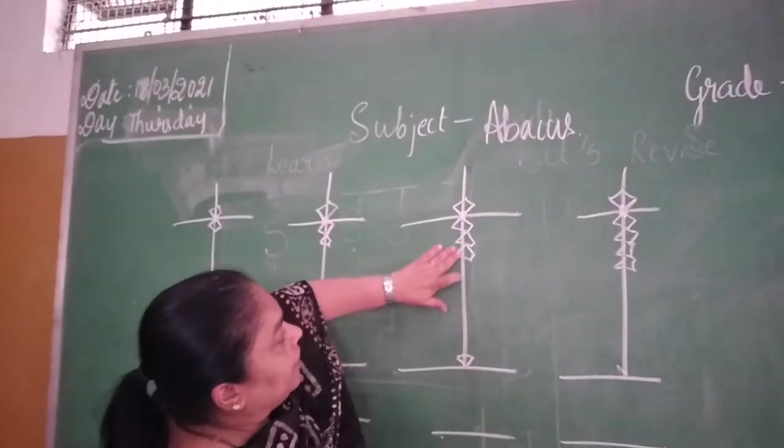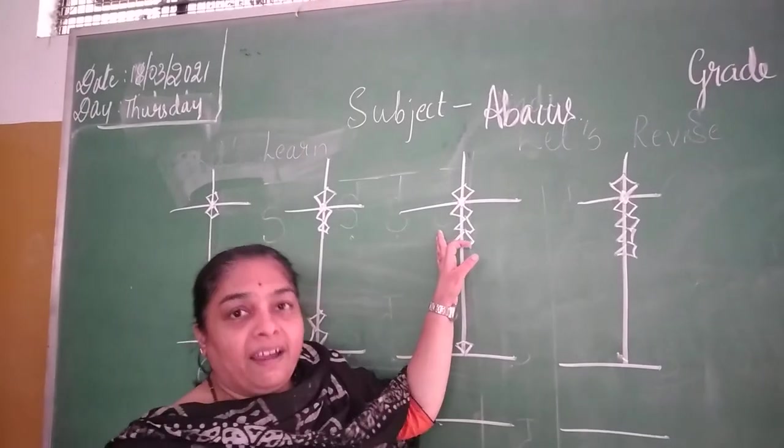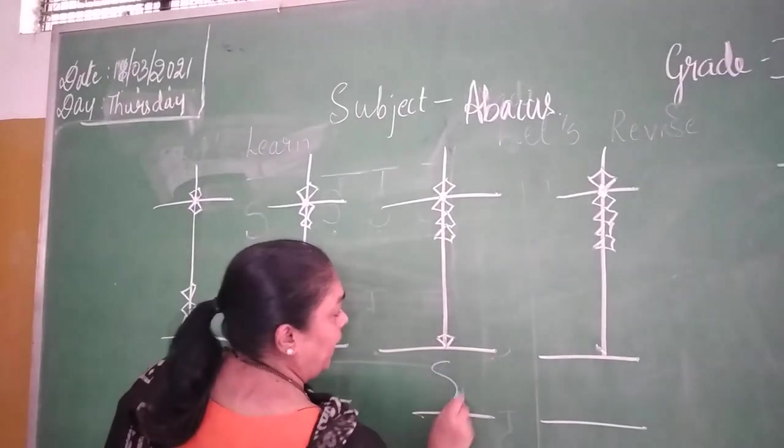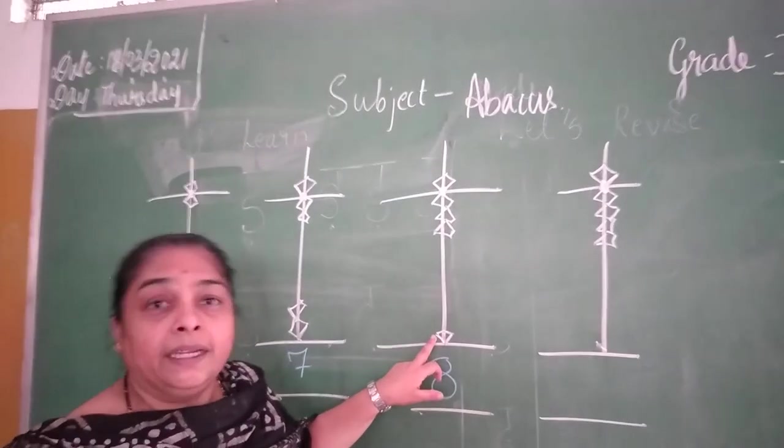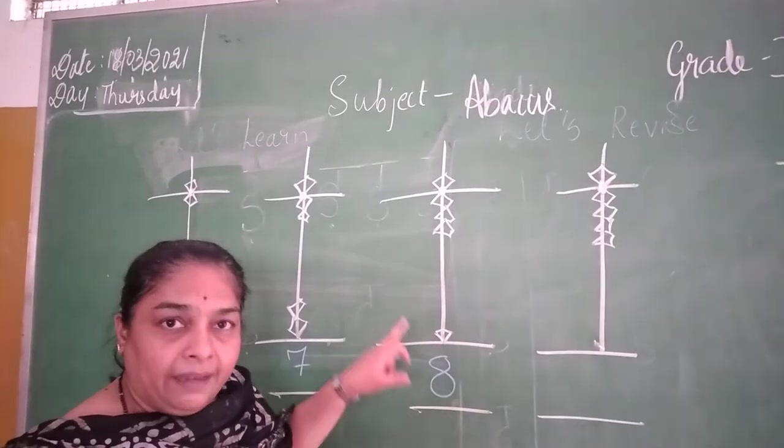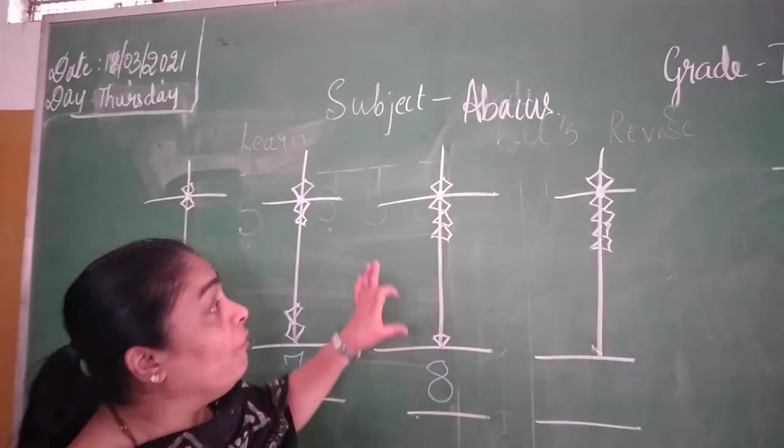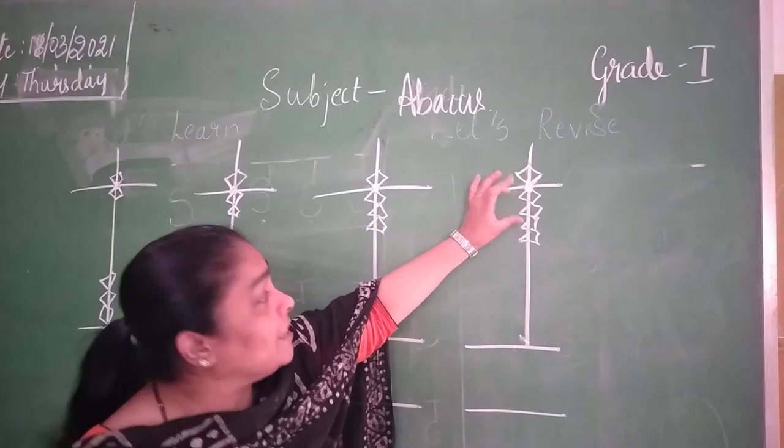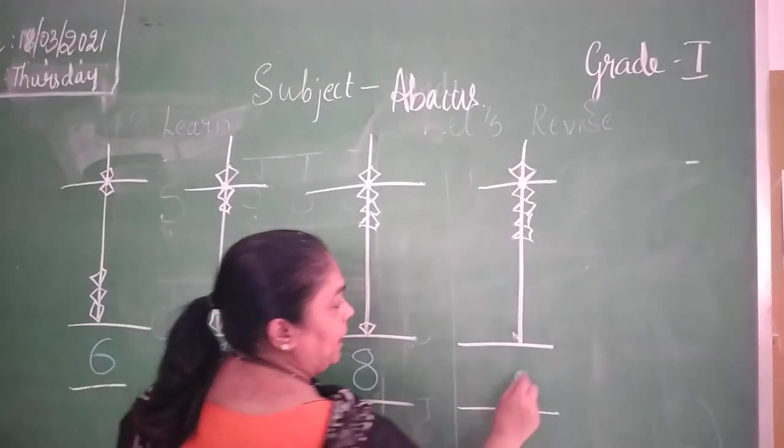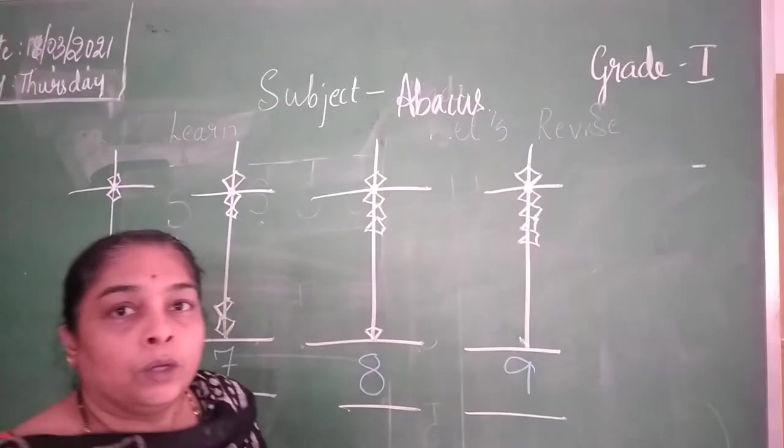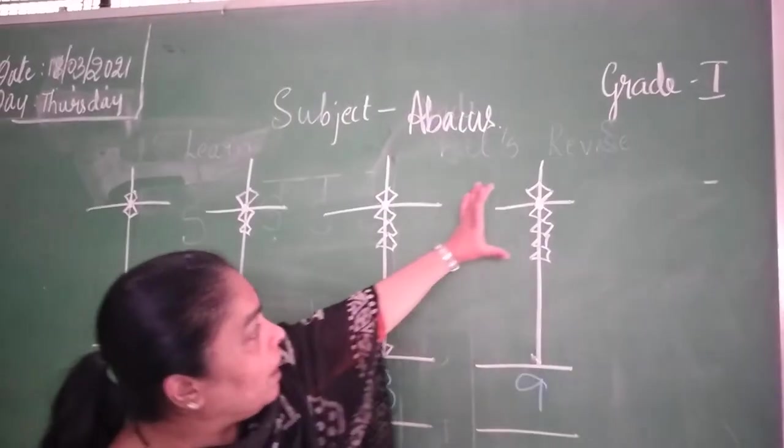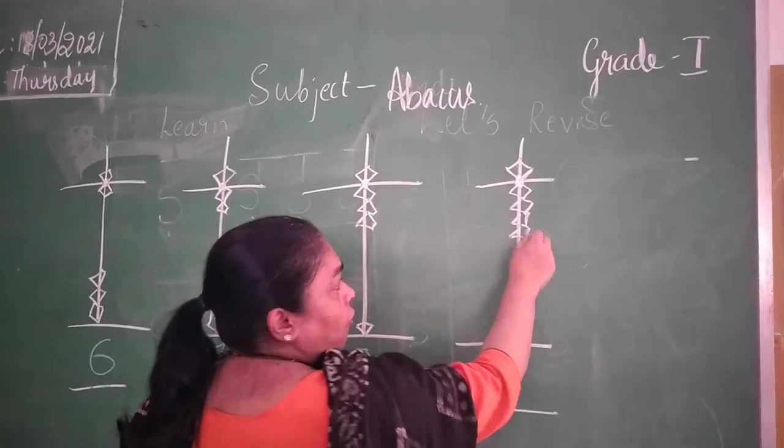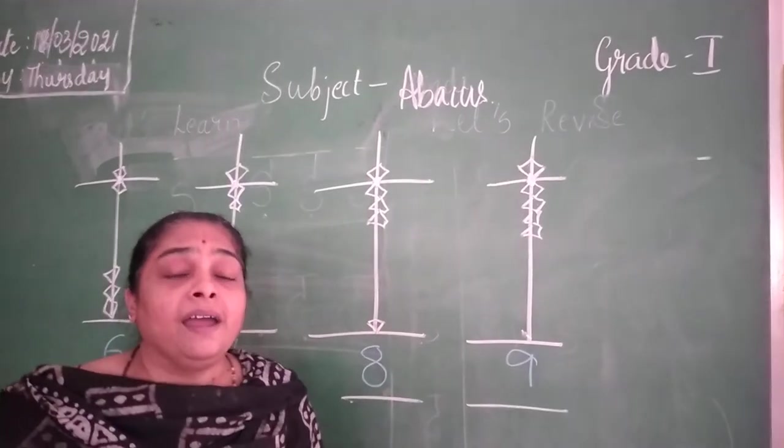Now, one upper bead and three lower beads, if they are touching the divider, it is eight, okay? Eight. When all the beads, all the beads of the column are touching the divider, it becomes nine. Okay children, see how the upper bead and the lower four beads are touching the divider.